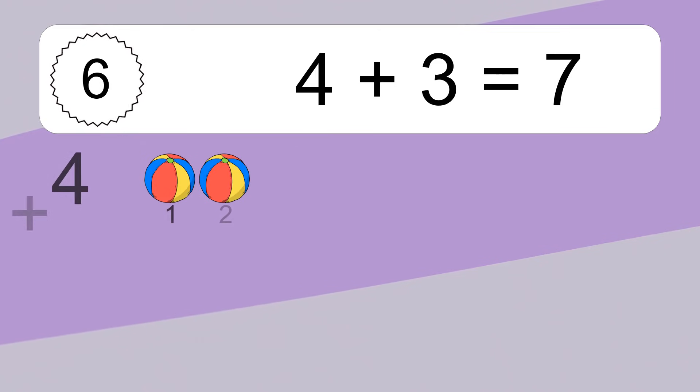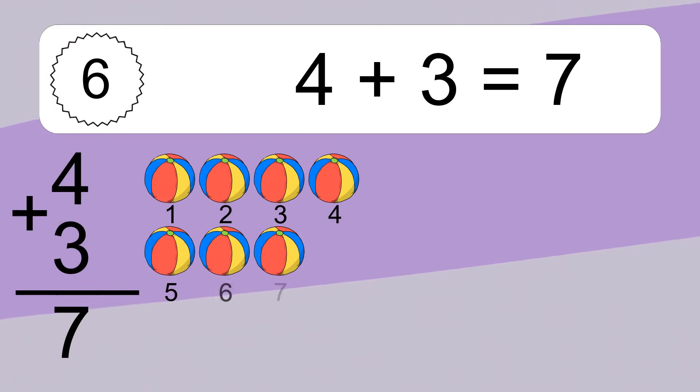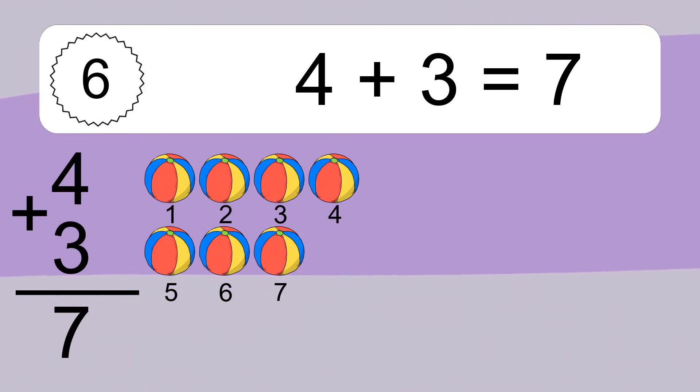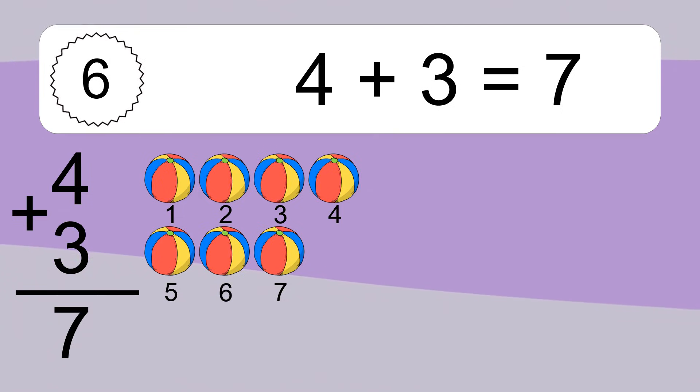Four plus three equals what? Four plus three equals seven.